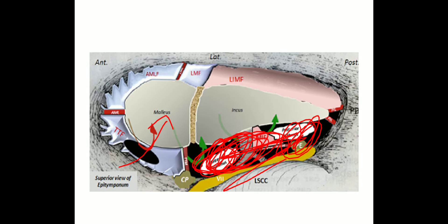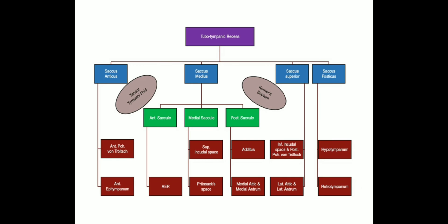In certain cases the tensor tympani fold will also be complete, resulting in total attic dysventilation when both the anterior and posterior isthmi are blocked. This confirms the importance of removing the tensor tympani fold during surgical treatment of middle ear disease to ensure good ventilation of the attic.